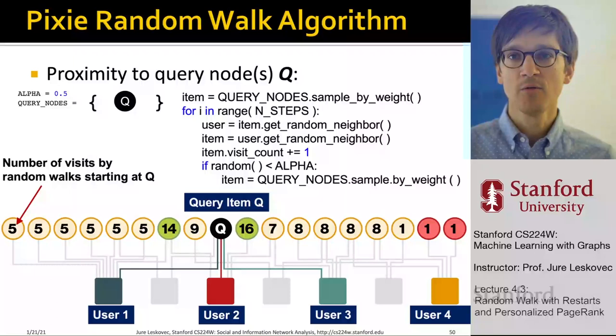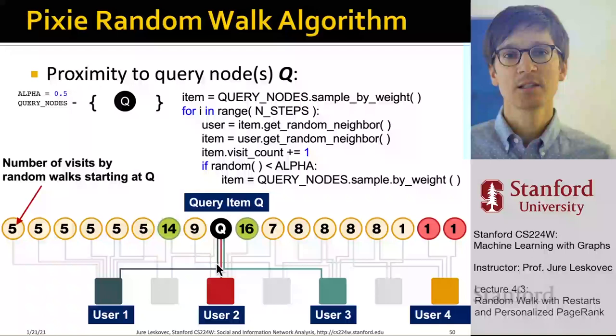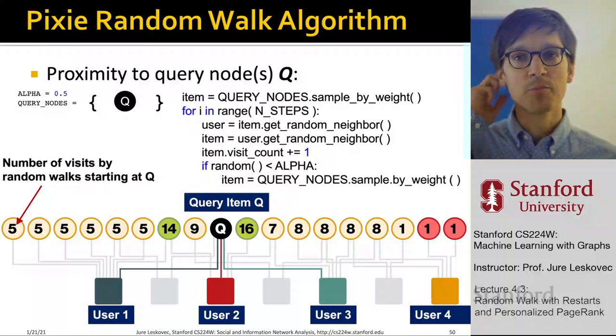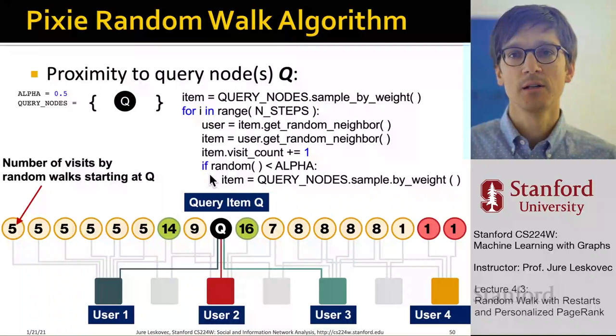You could also compute this using power iteration: represent the bipartite graph with a matrix M, start with a rank vector, transform the stochastic adjacency matrix with the teleportation matrix, and run power iteration. You would converge to the same set of node importances as the simulation approach.